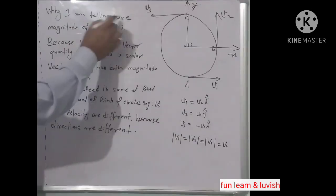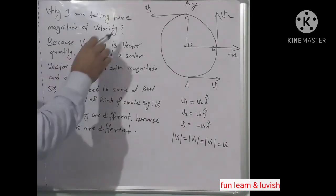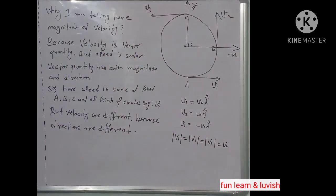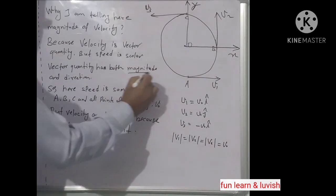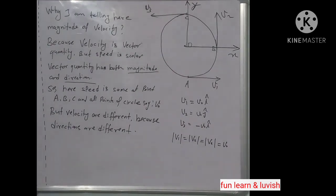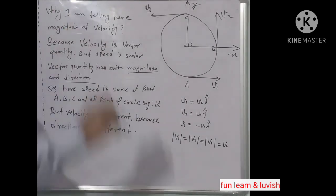In general, I am referring to the magnitude of velocity because velocity is a vector quantity, whereas speed is a scalar quantity. A vector quantity has both magnitude and direction, but a scalar quantity has only magnitude — a scalar quantity has no direction.